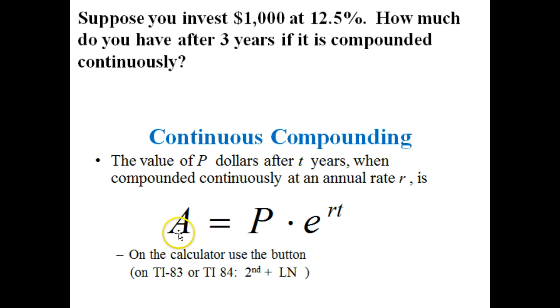A is what we're looking for, the amount that we'll have somewhere in the future. P is our initial investment, in this case is $1,000. E is the number E, that's the one that we've discussed. We'll show you how to find that one on your calculator.